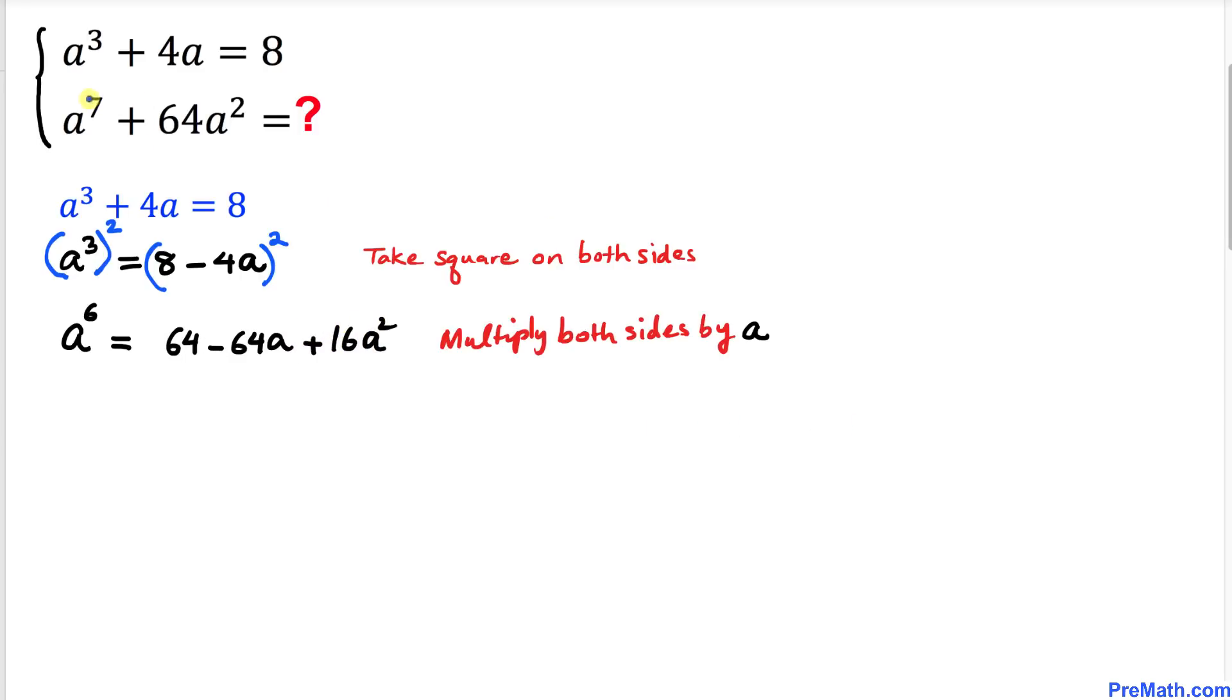Now we can see that we are interested in a⁷, so we are going to multiply both sides by a. I'm going to multiply a on this side and a on this side as well, across the board. Now on the left-hand side, this a could be written as a¹, and now we are going to use this formula, so we add their exponents: 1 + 6 = 7.